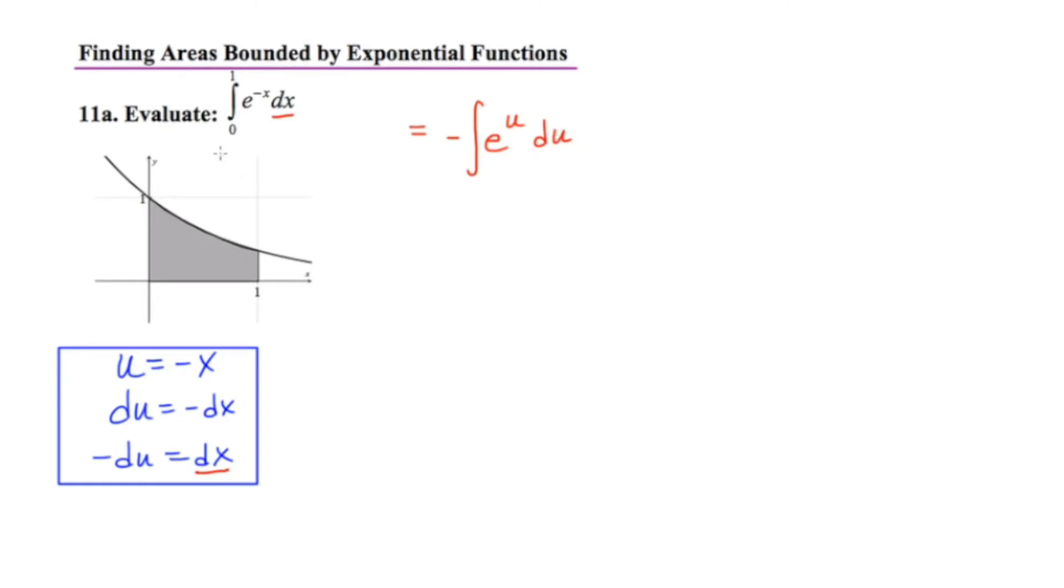Our lower limit when we were in terms of x was 0. If I plug that in here, I still have 0 because the opposite of 0 is 0. Now our upper limit was 1, and if I plug 1 in here, then we get u equals negative 1.